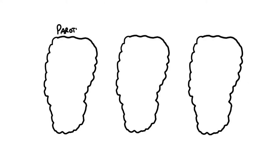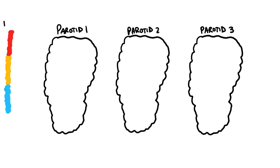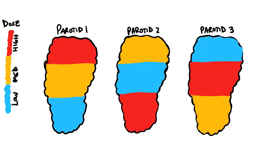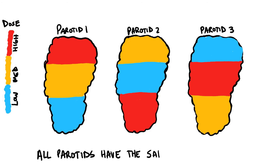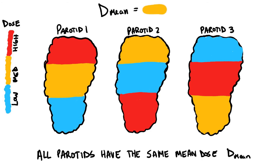The current standard of care for minimizing dose to parotid glands is to constrain the mean dose to the glands. A constraint on the whole mean dose suits a gland that has a homogeneous dose response, but for inhomogeneous organs it fails to account for any variance of functionality within different subregions.